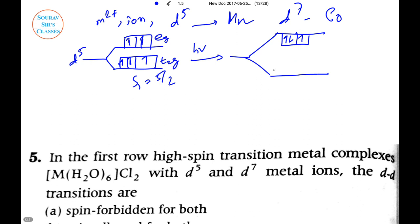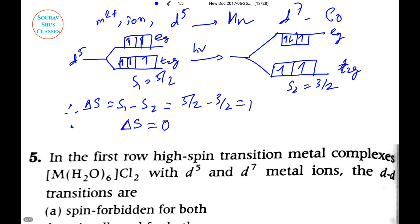So it will be one-sided in t2g (this is also paired, this is also paired, and this one is single) and eg will have 2 and 3/2. So S1 minus S2 is 5/2 minus 3/2, which is 1. But the spin selection rule is ΔS equal to 0. According to spin selection rule, hence d5 is spin-forbidden.